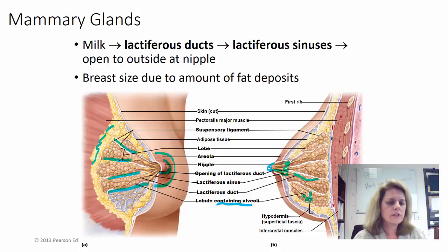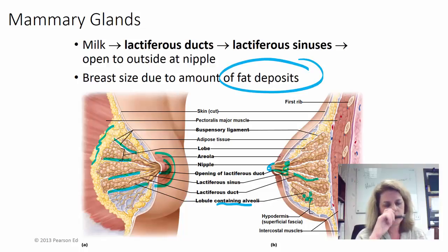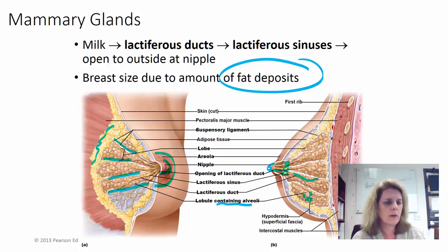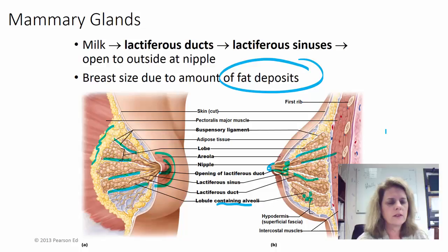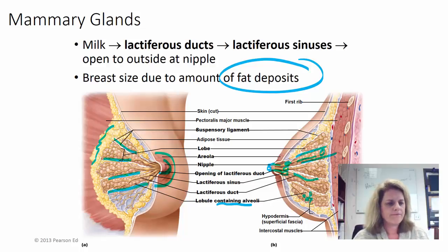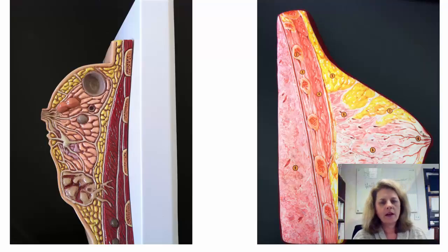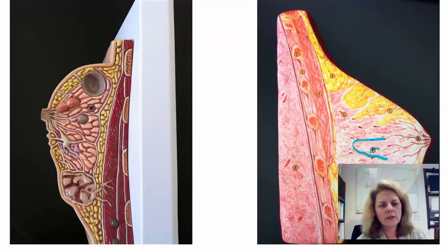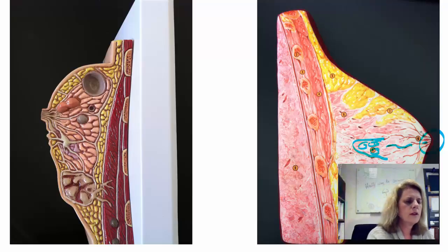Breast size is due to fat deposits, not mammary gland size — a large-breasted woman will not necessarily nurse better than a small-breasted woman. On models, you need to identify the lobes of the mammary glands, the alveoli, the lactiferous ducts, the lactiferous sinuses, and the nipple. Another diagram shows the fat tissue, lobules where milk is made, the lactiferous ducts, sinuses, and nipple.